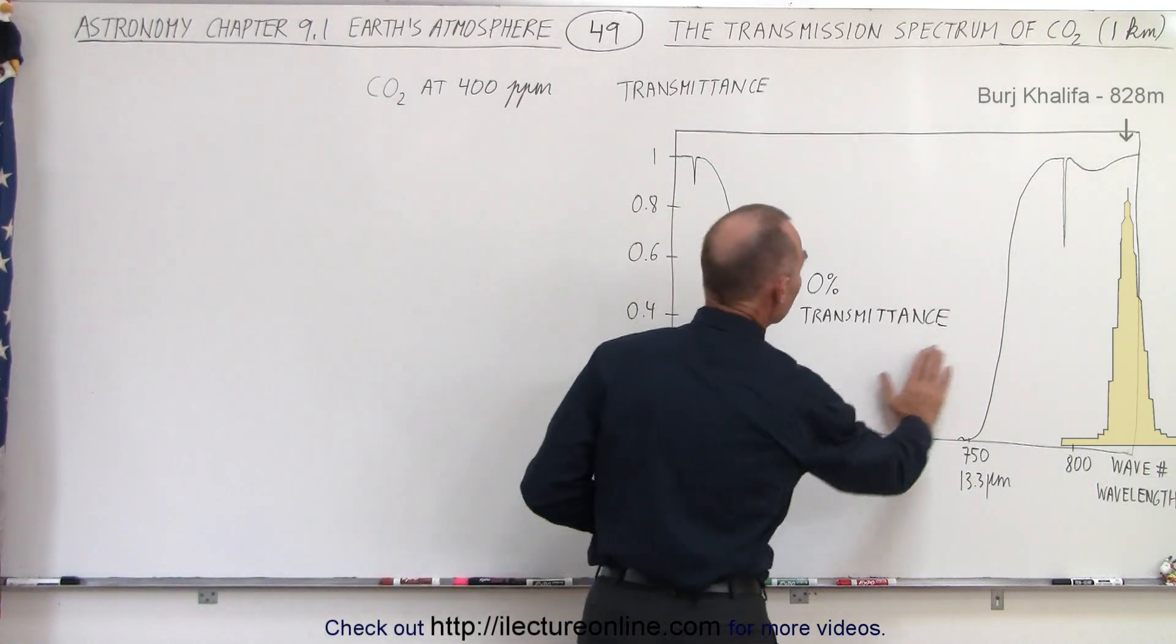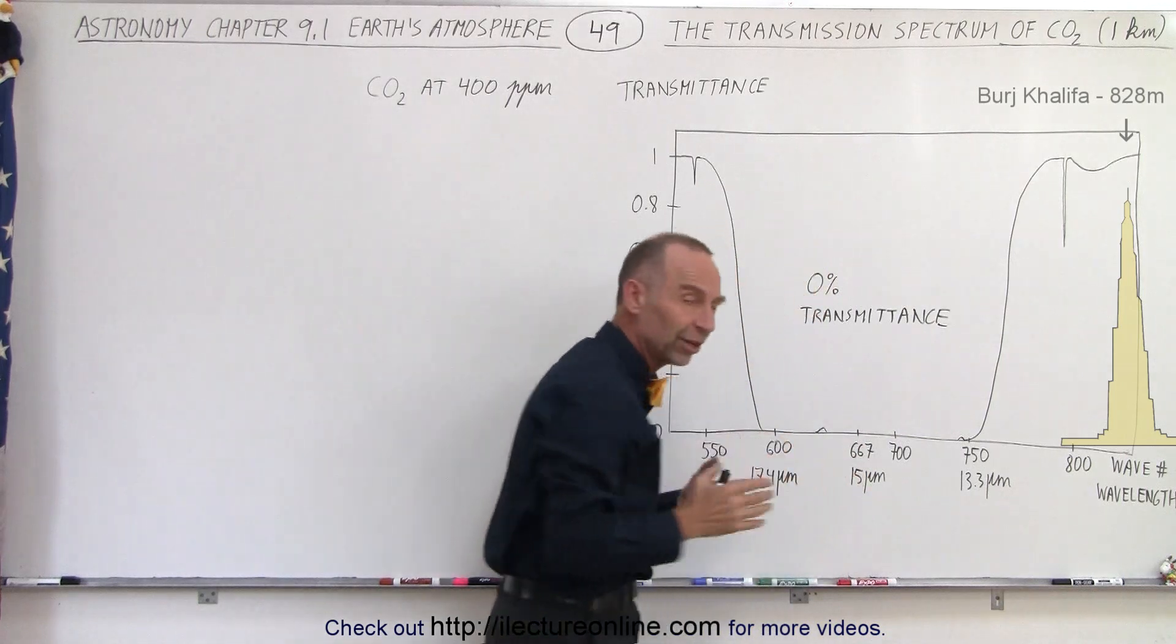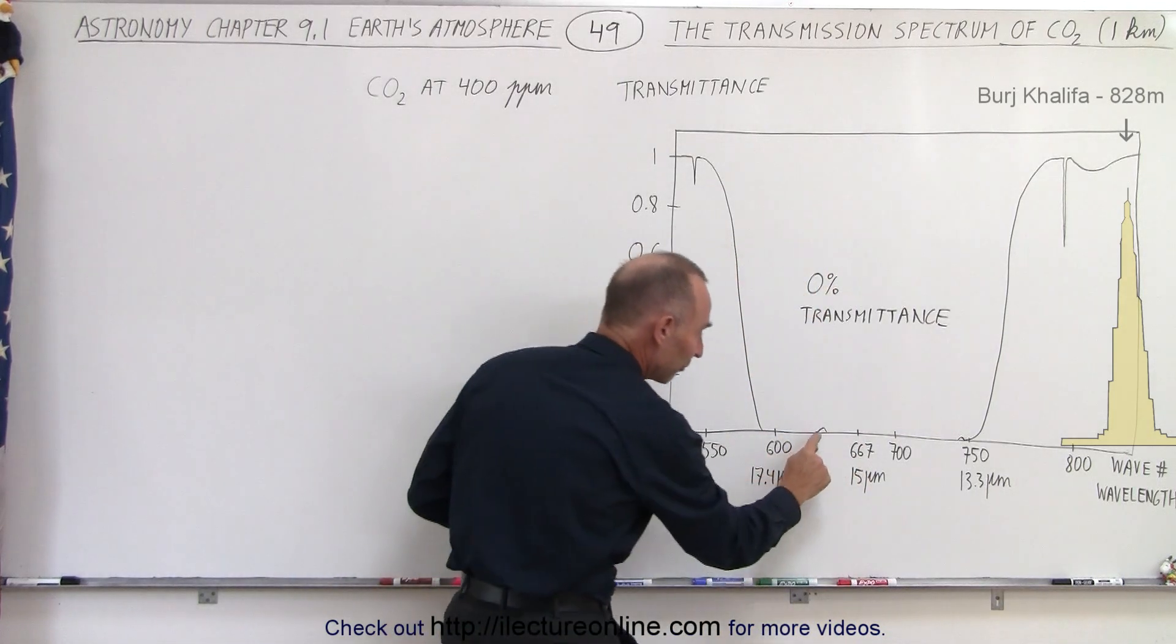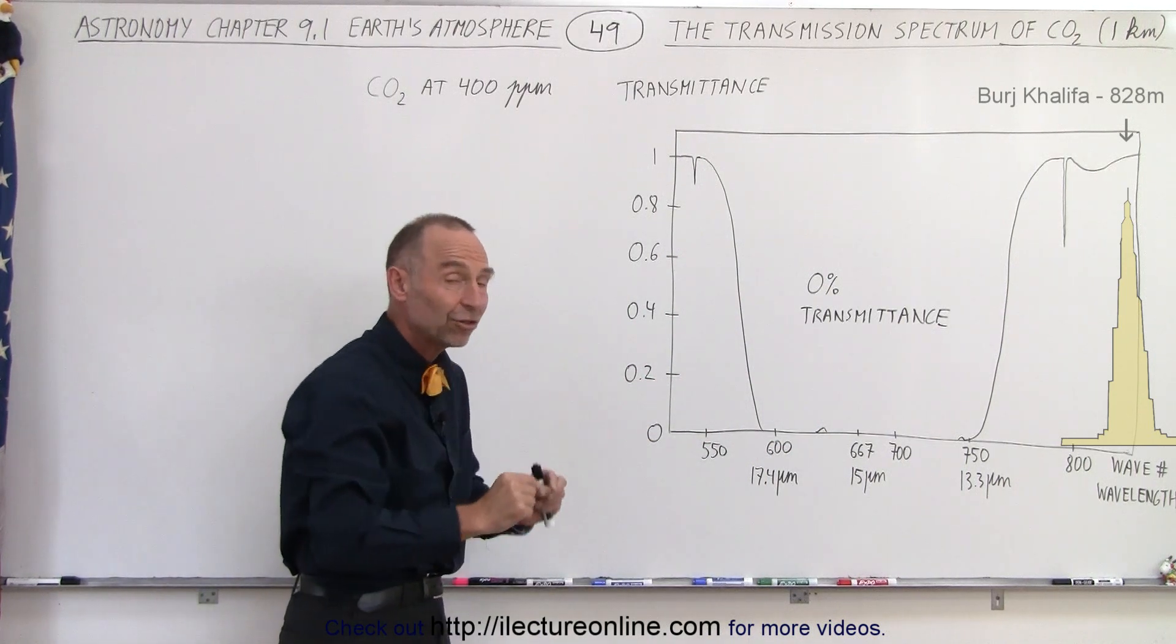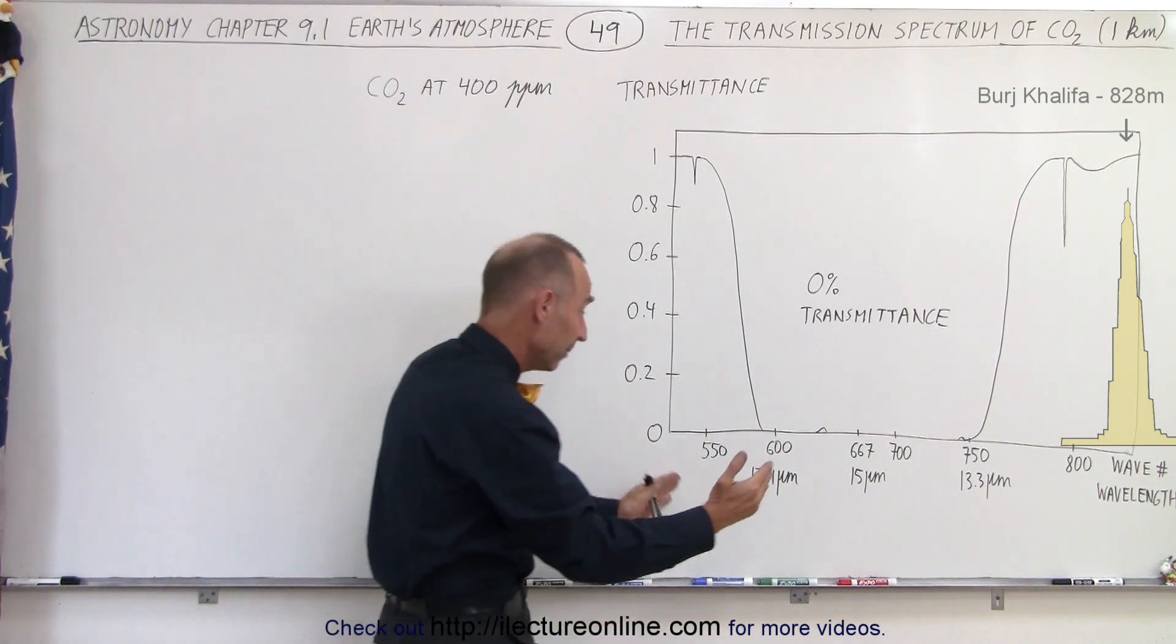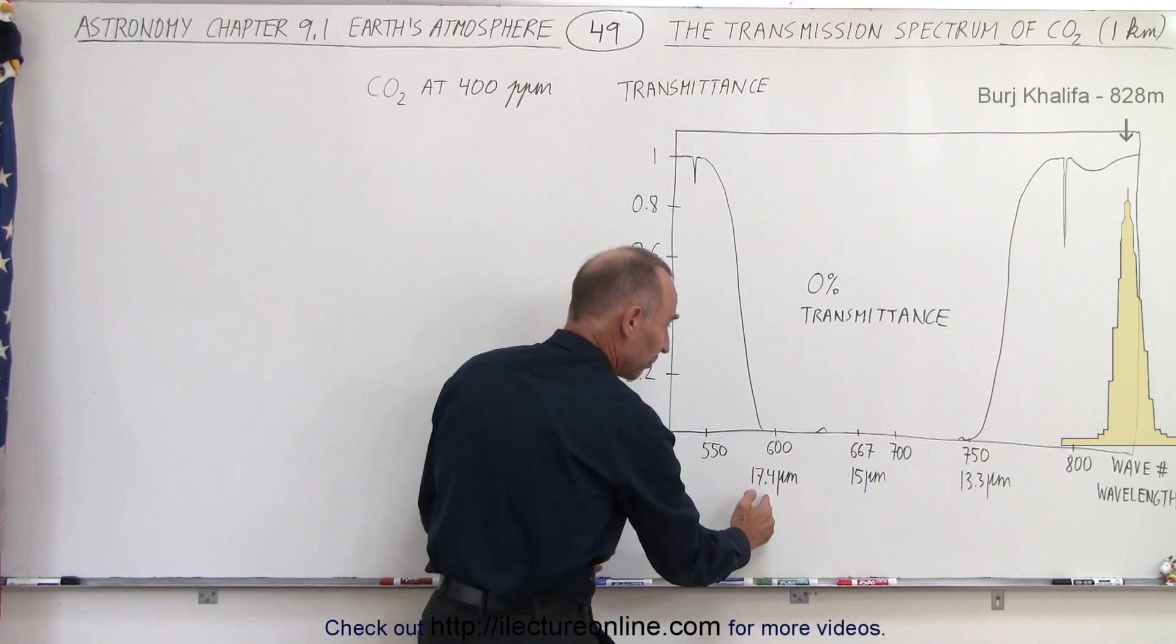This entire band of radiation is completely absorbed. Virtually zero percent of it is transmitted, except a few small transmission windows where a very tiny percentage of the radiation coming from the surface of the earth within a band of about 13.3 micrometers to about 17.4 micrometers.